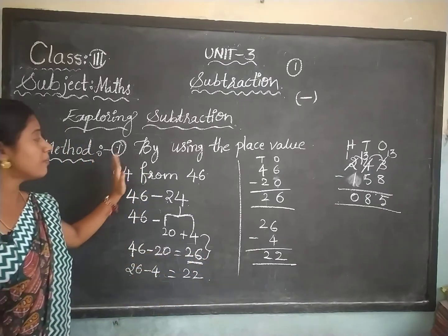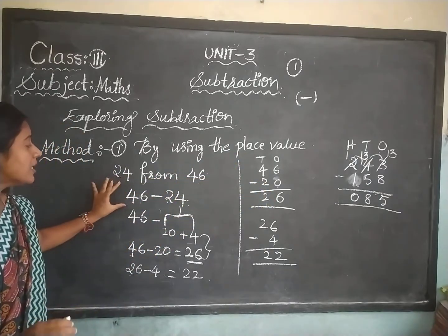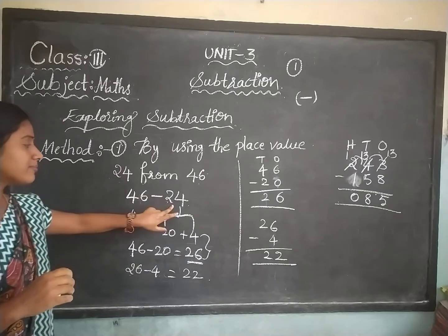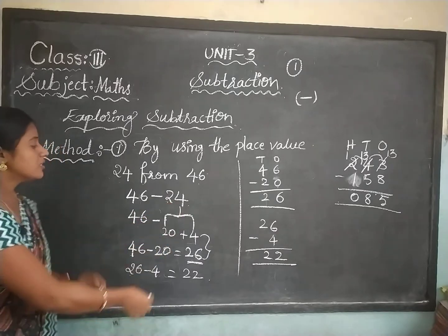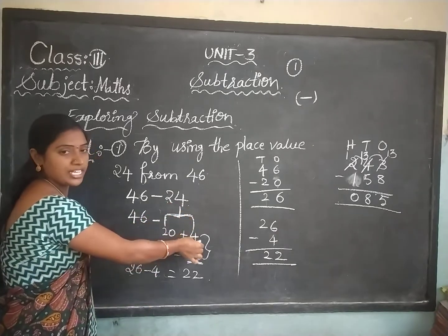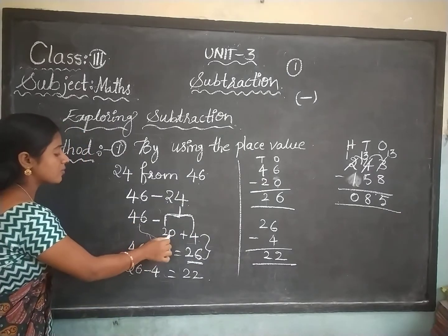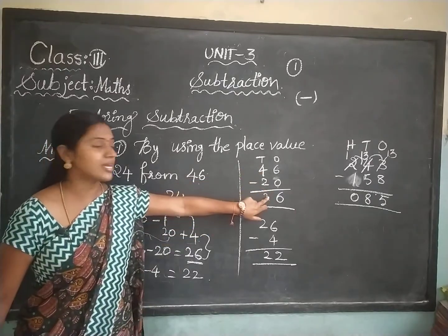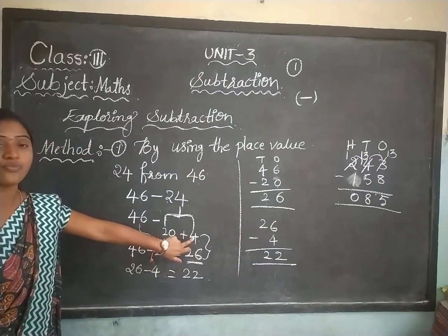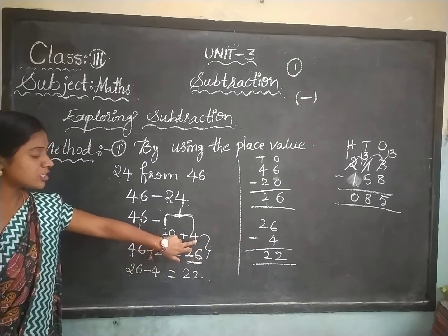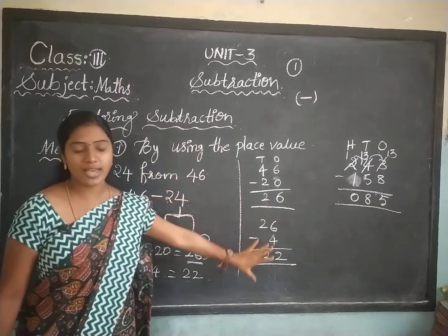This is Method 1 by using the place value. First, write the first number as usual. Break the second number: 46 as it is, and 24 you break into 20 plus 4. First do 46 minus 20, which equals 26. Then 26 minus 4, which equals 22.